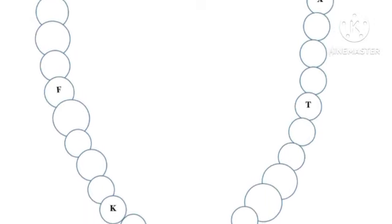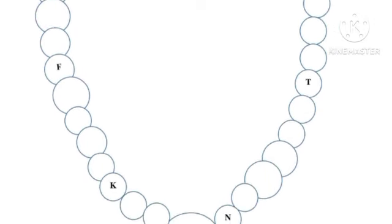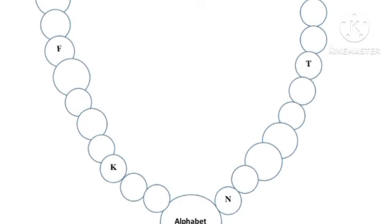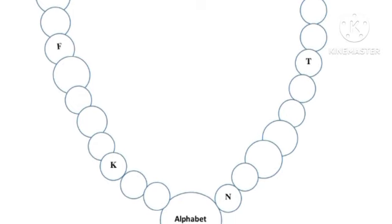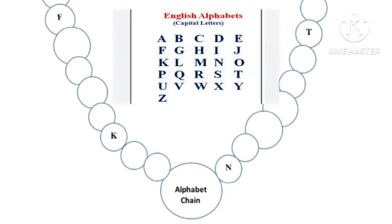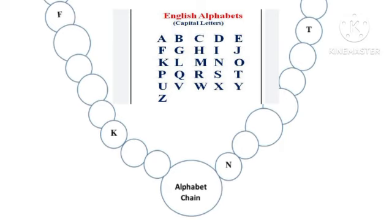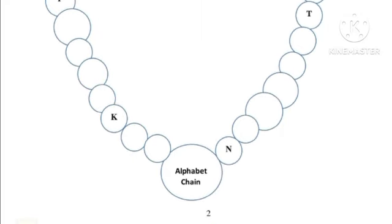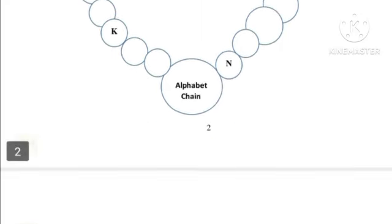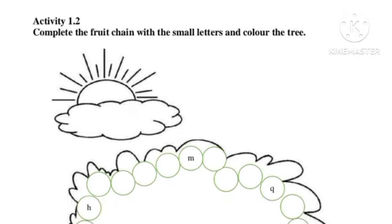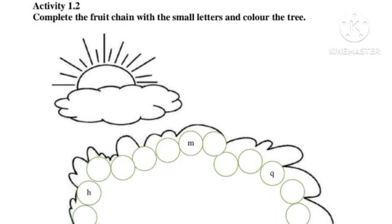Here is the alphabet chain. You need to write the chain: B, C, D, E, F, G, H, I, J, K, L, M, and like this you are going to write till Z. Next, activity number 2: complete the fruit chain.